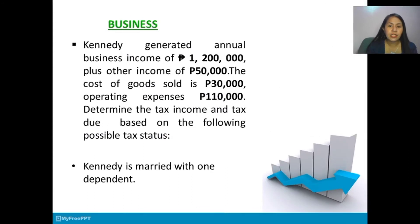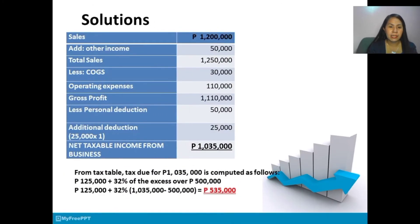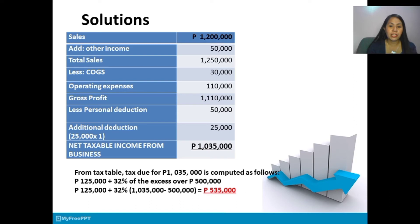Second problem — Business income: Kennedy generated an annual business income of 1,200,000 plus other income of 50,000. The cost of goods sold is 30,000 and operating expenses is 110,000. Determine the taxable income and tax due based on the following possible tax status. Kennedy is married with one dependent. Sales 1,200,000 add other income 50,000, total sales is 1,250,000. Less cost of goods sold 30,000.